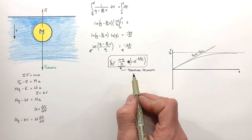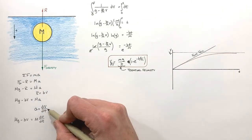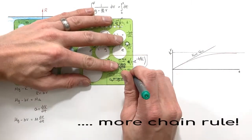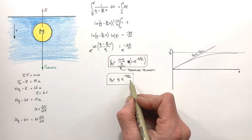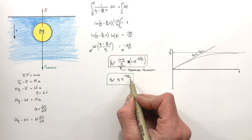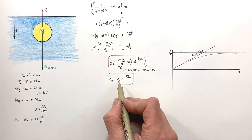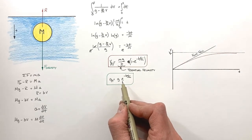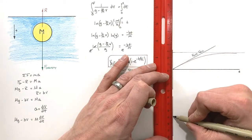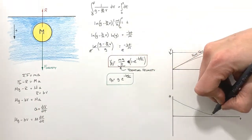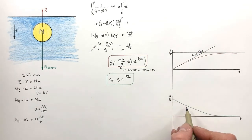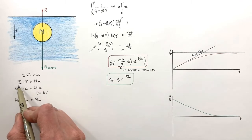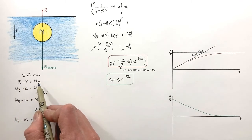Let's look at the acceleration of the ball. Taking the derivative of velocity with respect to time gives us acceleration versus time. At a time of zero, the term e^(−bt/m) equals one, so the initial acceleration is g — just as though the ball were in free fall. But as time goes on, the acceleration approaches zero. If gravity is constant and the resistive force increases, the acceleration is going to decrease, as you can see in this equation.